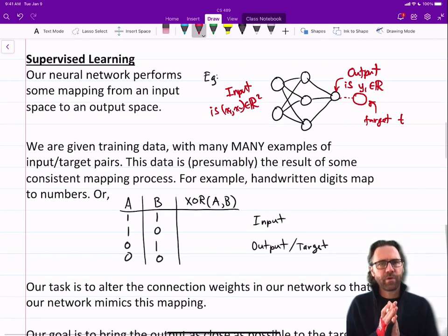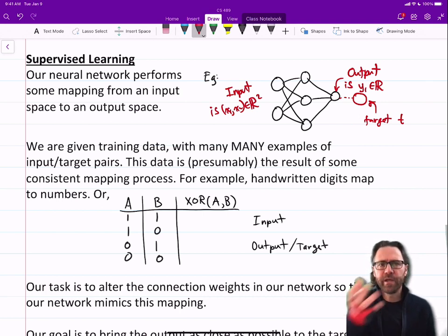So we're given training data with many, often many, many examples of the input-output pairs. So this data in the dataset is presumably the result of some consistent mapping process. So given some input, it consistently creates an approximation of some output.